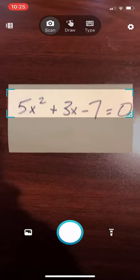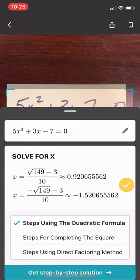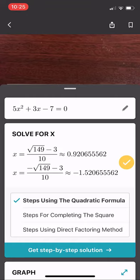Now I'm going to take a photo of an equation right here. 5x squared plus 3x minus 7 equals 0. And already it's converted that via OCR into the math equation.